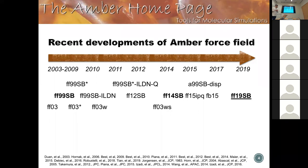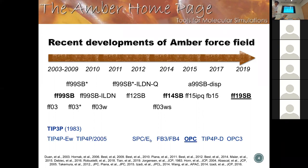Since FF99SB was developed in 2006 and FF03 in 2003, there are a few variants after that, like FF99SB-ILDN from Shaw and FF99SB-ILDN-Q from Robert Best. Then we have 14SB, then FF50-IPQ from Li-Ping Wong's group, 99SB from Shaw, and now we have 19SB. These are protein force field developments, and in the meantime water models have been improving as well.